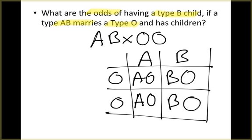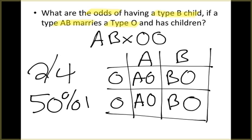How many squares are B? How many squares are going to be type B? And the answer is two. There are four total squares, so the odds of having a child with type B blood would be 50 percent.